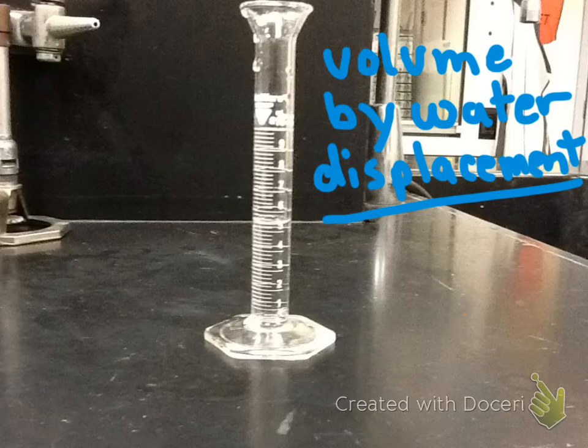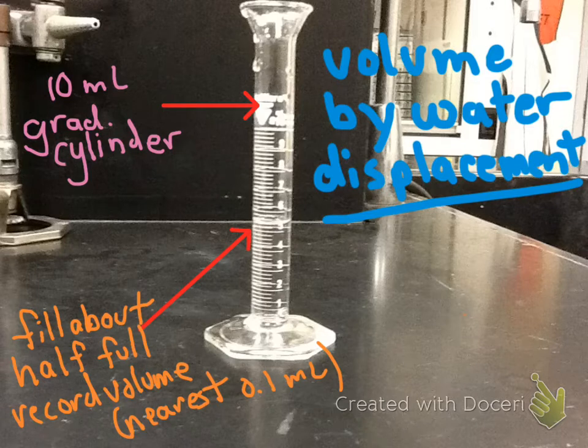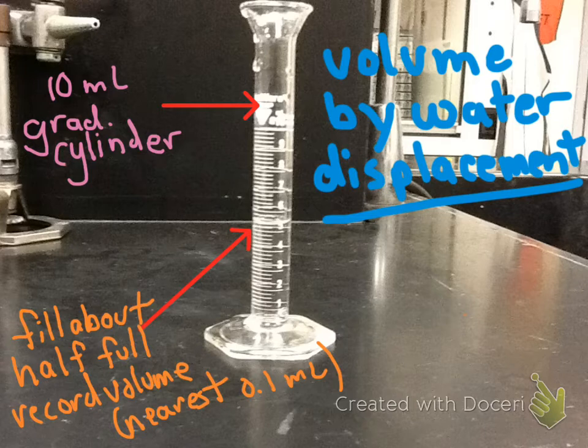Once you've recorded the weight of your unpopped kernels or the mass in grams, your next task is to get the volume of those kernels. And we do this by using the water displacement method. We take our 10 ml graduated cylinder, which should be in your bench area, and fill it about half full. You need to record your volume to the nearest 0.1 ml. So even if you have it right on 5, you should record 5.0, not 5.